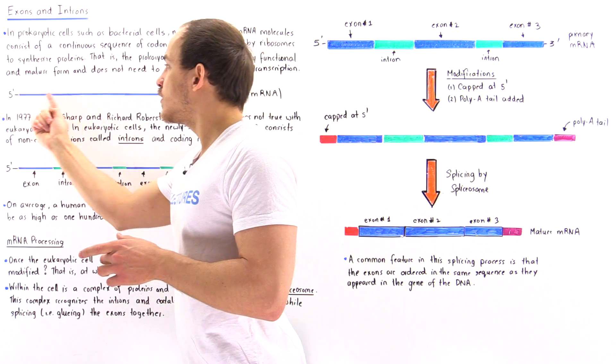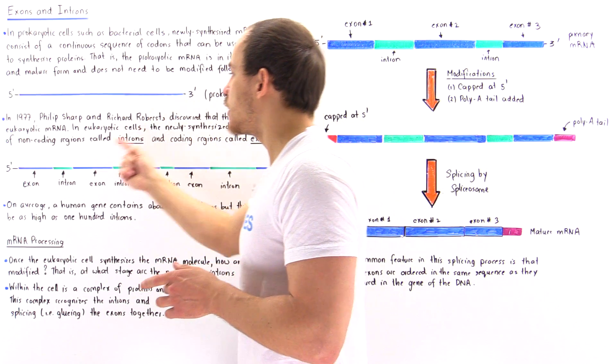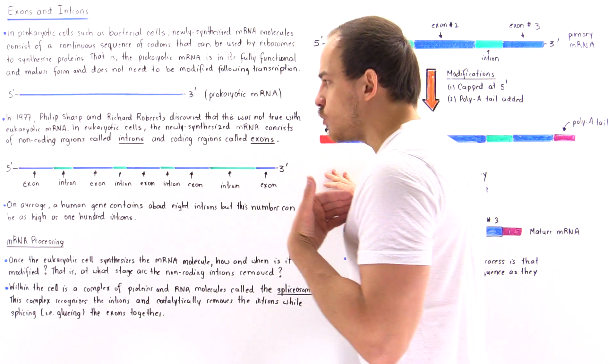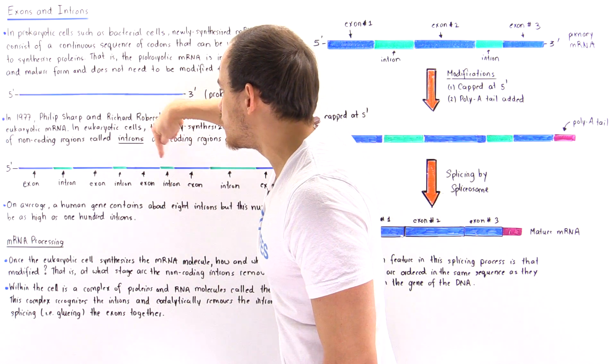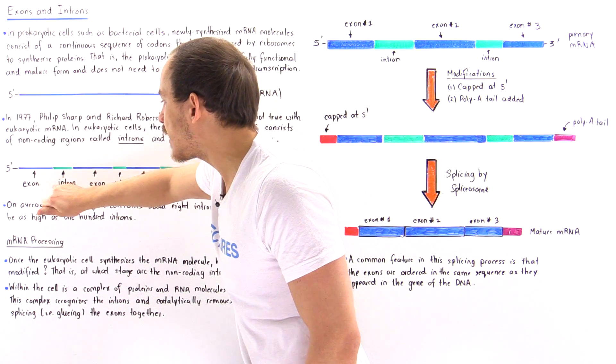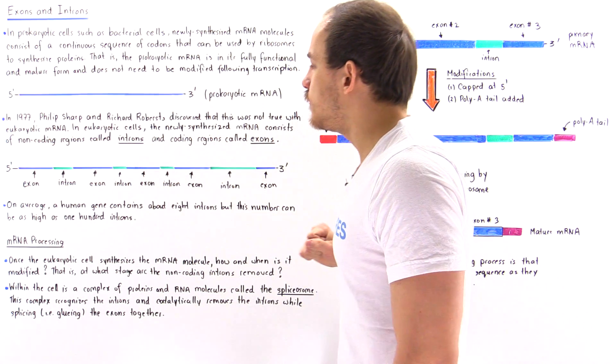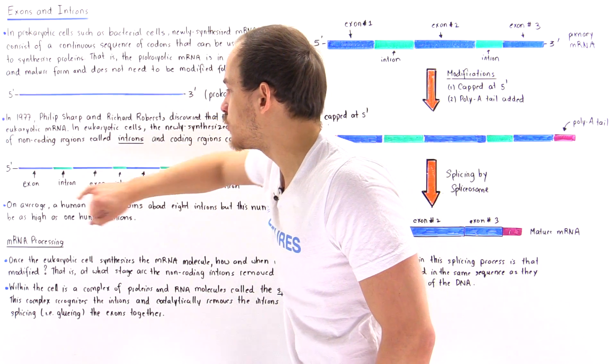So instead of looking like this one, instead of having a continuous blue section, the mRNA molecule in eukaryotic cells, such as our own human cells, consist of these intervening sections known as introns. In fact, the INT means intervening sequence of nucleotides. So we have one, two, three, four green regions, the introns in this particular mRNA.